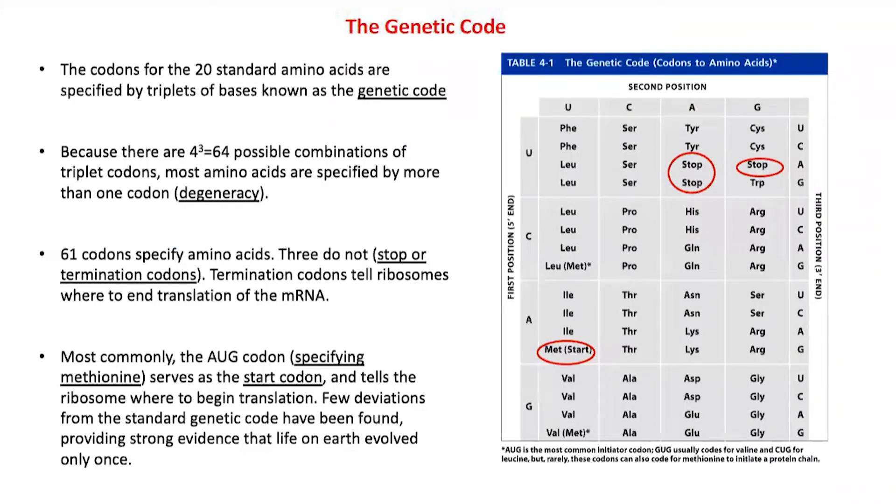A student asks why the amino acid sequence always starts with methionine, even if alternate codons like leucine or valine are the start codon. The instructor responds that this seems to be the way biology is, and asks if there's any advantage or structural work being done on this.